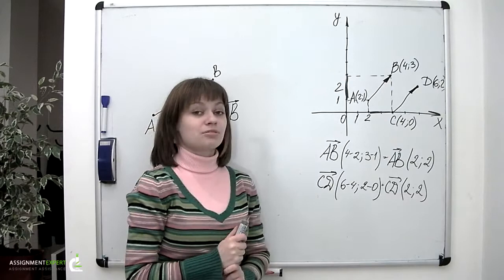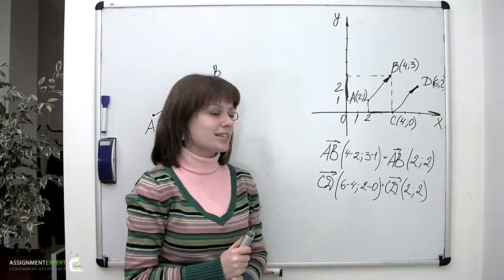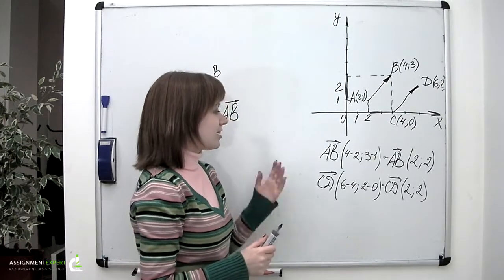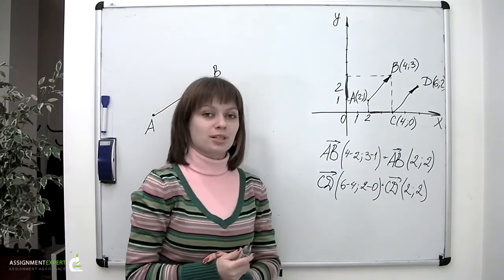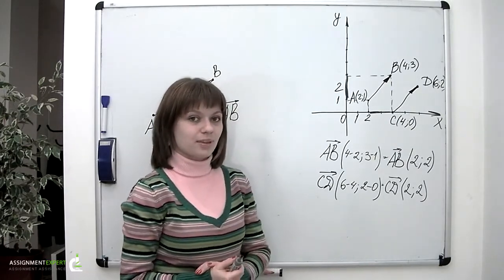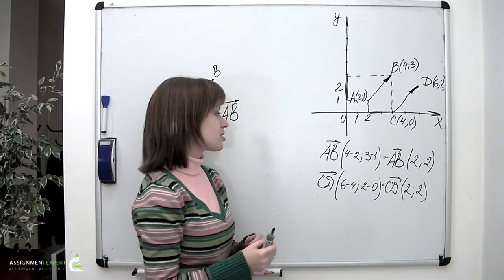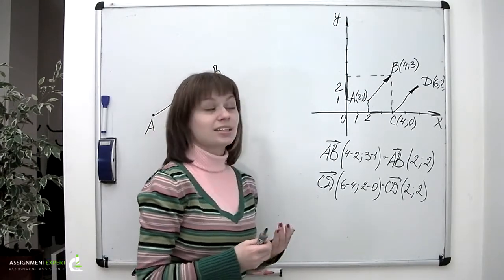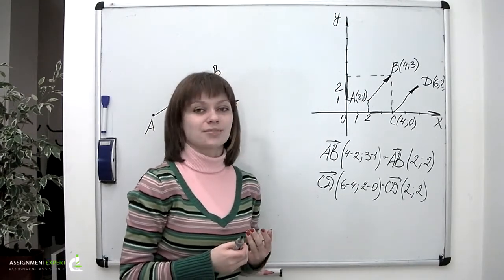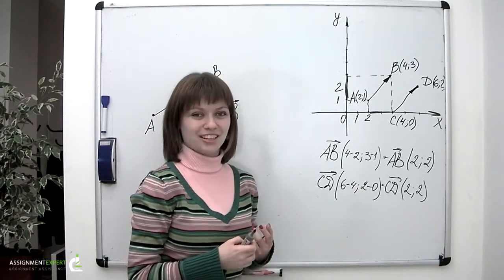Now for three-dimensional cases, vectors are represented by triplets of numbers, and these numbers are calculated exactly the same way as for two-dimensional cases.